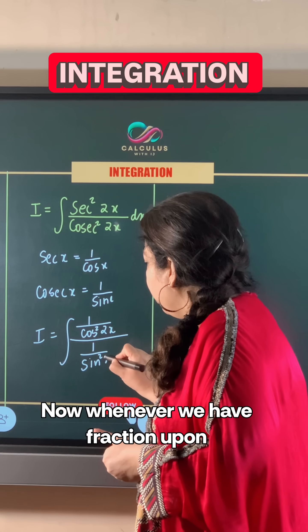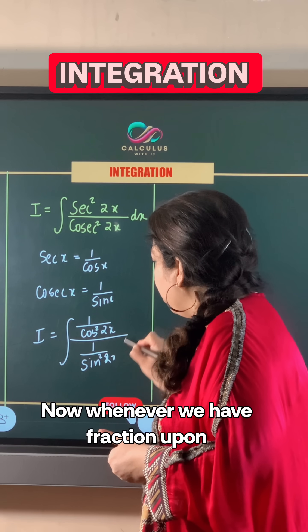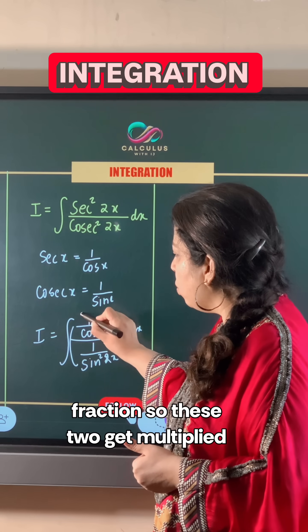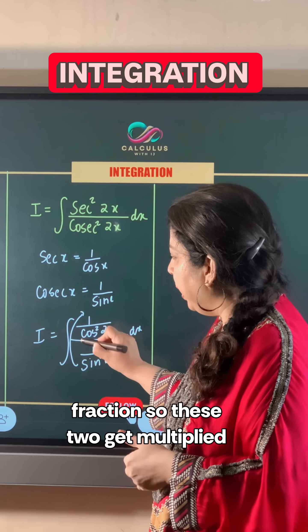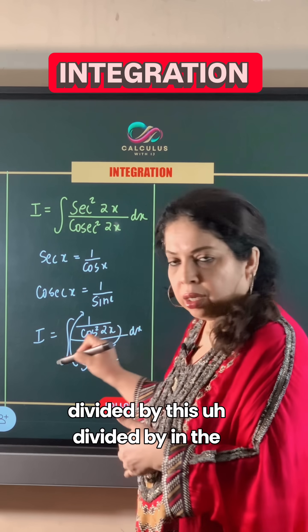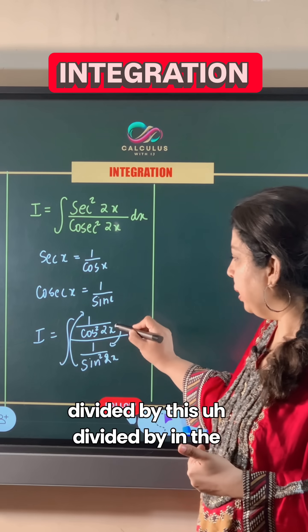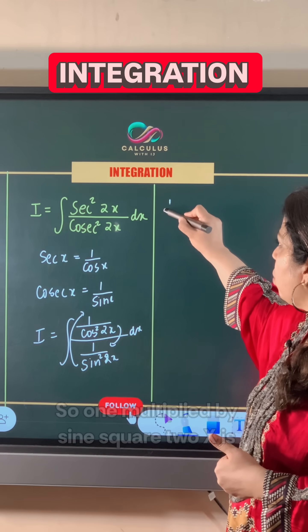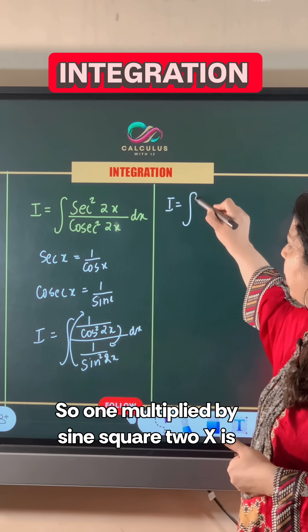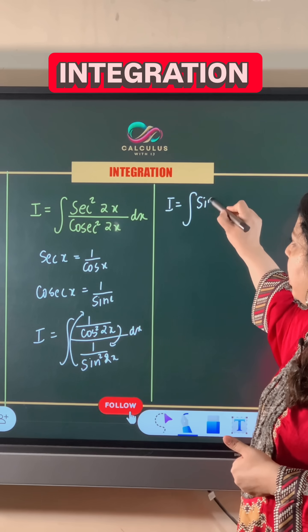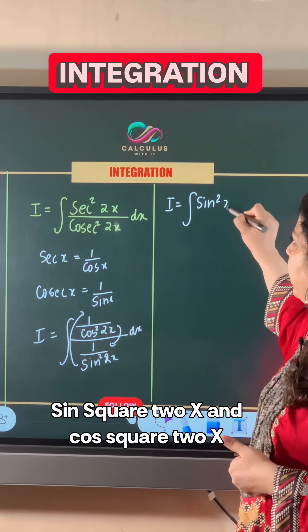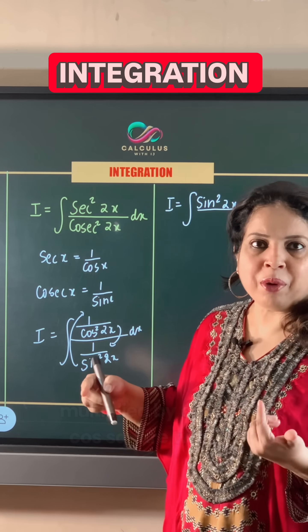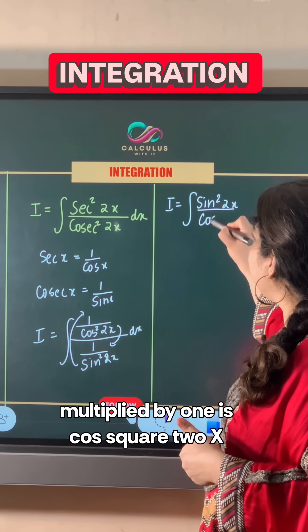Now whenever we have a fraction upon a fraction, the two denominators get multiplied. So 1 multiplied by sine squared 2x is sine squared 2x, and cos squared 2x multiplied by 1 is cos squared 2x.